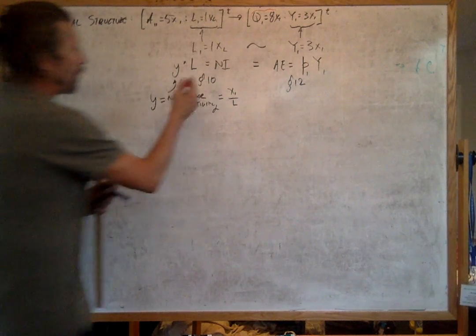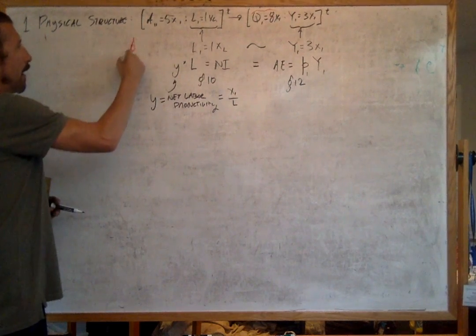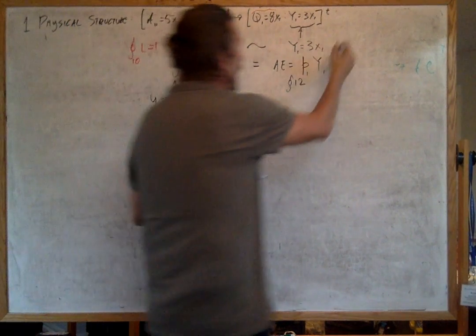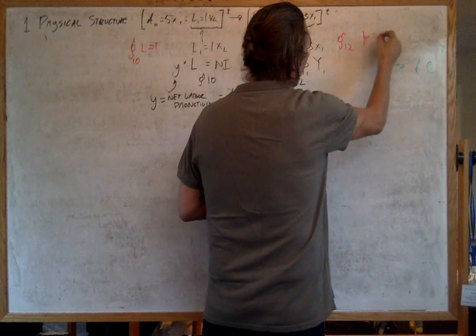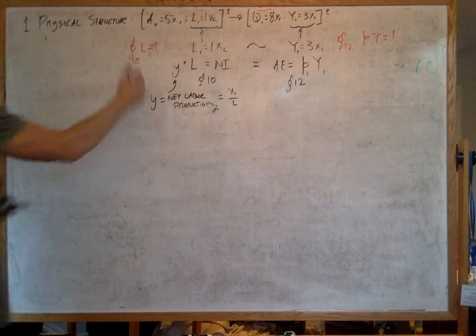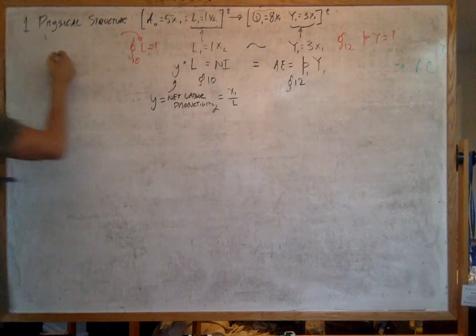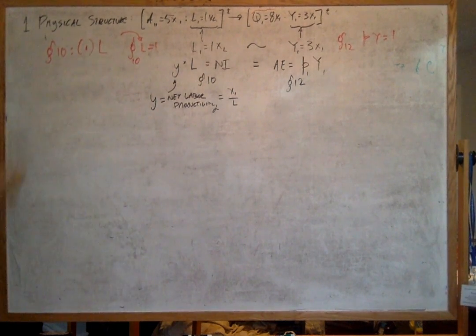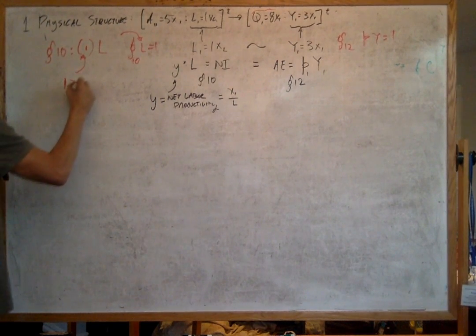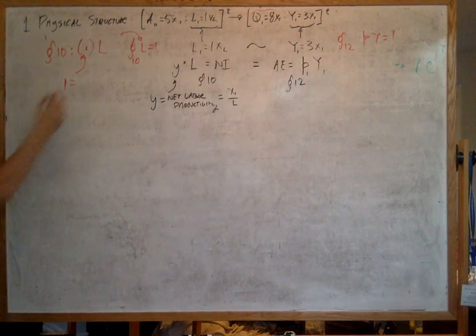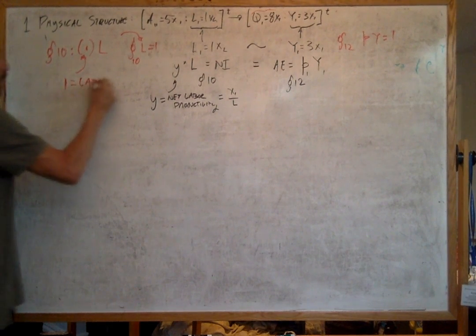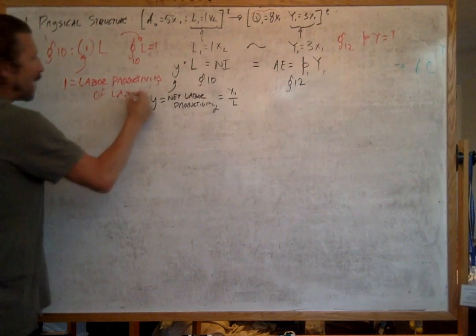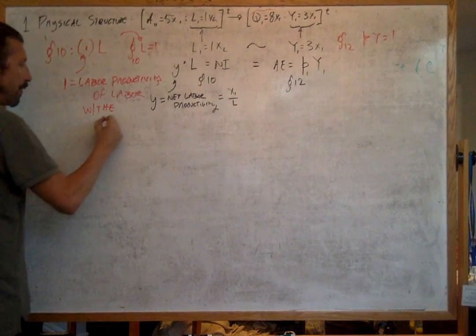In paragraph 10, Sraffa makes L equal to 1, and in paragraph 12 he makes the price of the net output equal to 1. What I'm arguing is that there's going to be an implicit value form here. What's happening in paragraph 10 is that it's going to be 1 times L, where this 1 is going to be equal to labor productivity when we're in the labor theory of value — the labor productivity of labor in the labor theory of value.